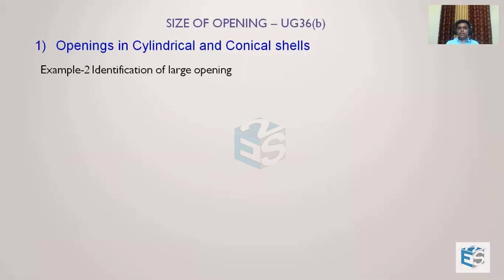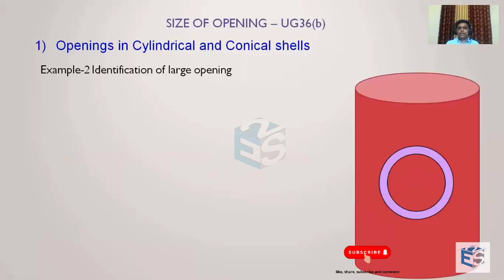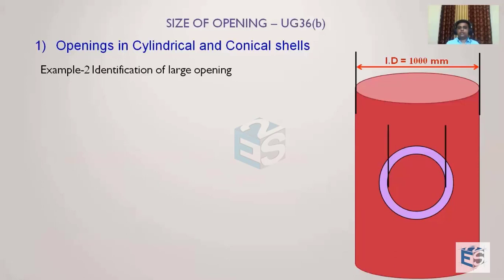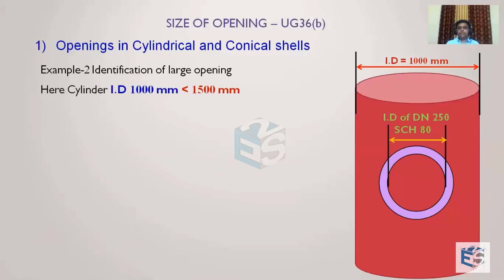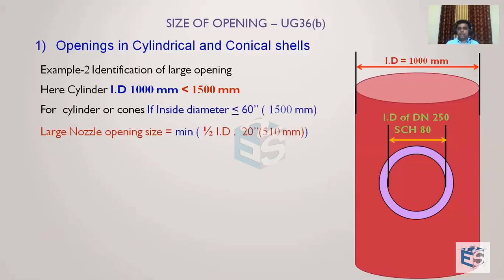Example 2: Again the vessel diameter is 1000mm, but now the nozzle is a standard DN250 Schedule 80 pipe. Since the vessel ID is still less than 1500mm, the large opening criterion is again the minimum of half the diameter or 510mm, which gives 500mm.